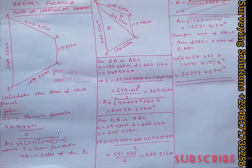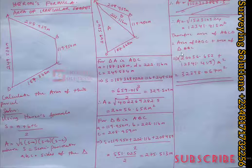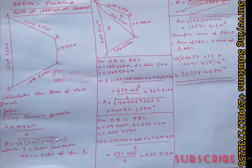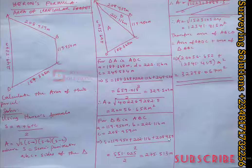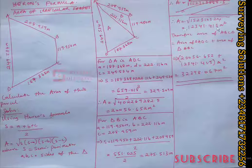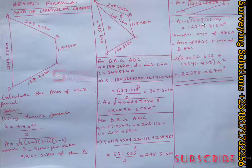Apply the same formula: S × (S − a) × (S − b) × (S − c) = 275.513 × (275.513 − 119.550) × (275.513 − 222.116) × (275.513 − 208.959). You should arrive at 152,310,524. Then take the square root of that answer to get the area of Triangle ABC.